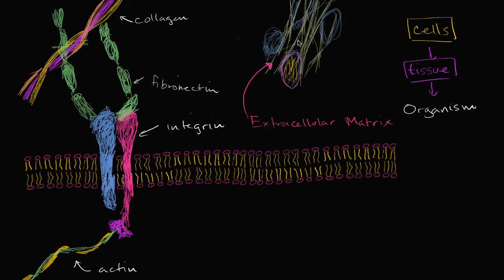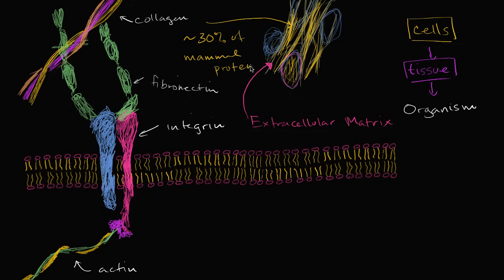The extracellular matrix is made up of a bunch of different types of fibers, proteins, and glycoproteins. Probably the most notable of these is collagen — I'll draw collagen in yellow right over here. Collagen is actually the most common protein in mammals, making up approximately 25 to 35% — I'll go with roughly 30% — of the proteins in mammals. So roughly 30% of the protein in your body is collagen, and a lot of it makes up the strands of the extracellular matrix.